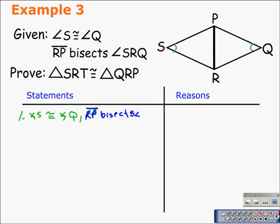...RP bisects angle SRQ — that angle on the bottom. What that's going to mean is that angle SRP and angle QRP are going to be congruent because of the definition of angle bisector.